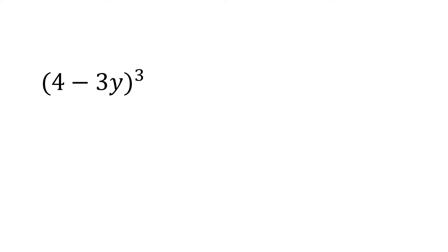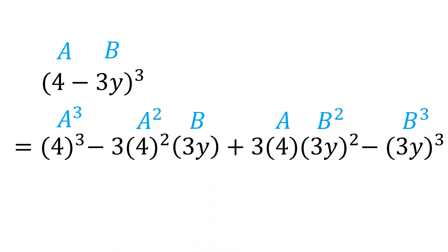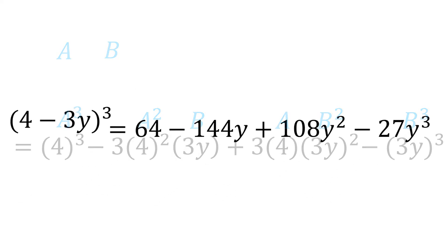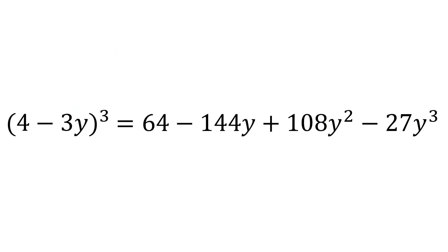If we have (4 minus 3y) cubed, then we have a as 4 and b as 3y. Now instead of using the FOIL method, just take the cube of 4, minus 3 times the product of the square of 4 and 3y, plus 3 times the product of 4 and the square of 3y, minus the cube of 3y, which is equal to 64 minus 144y plus 108y squared minus 27y cubed. So therefore, (4 minus 3y) cubed is equal to 64 minus 144y plus 108y squared minus 27y cubed.